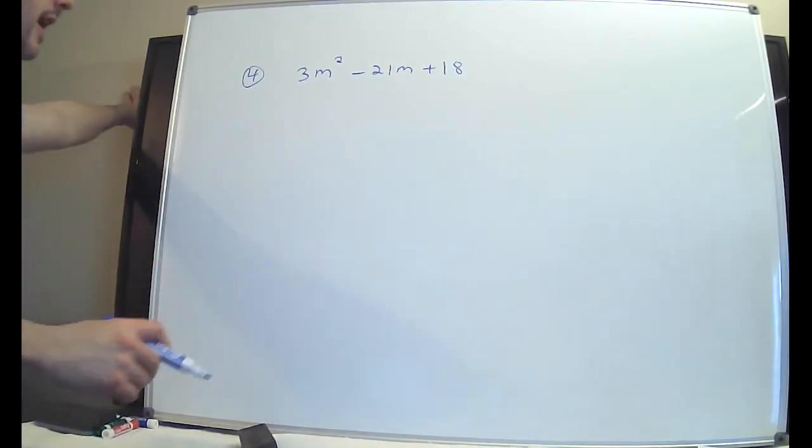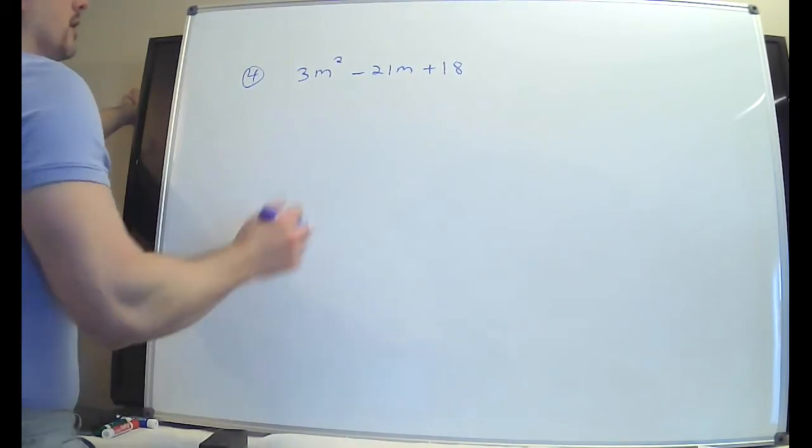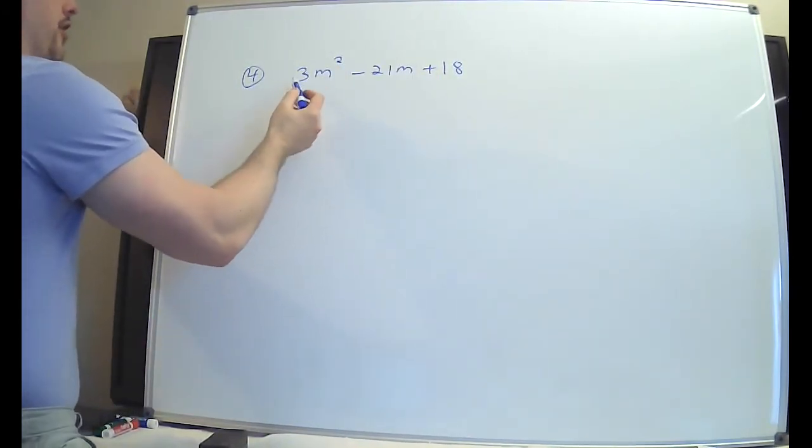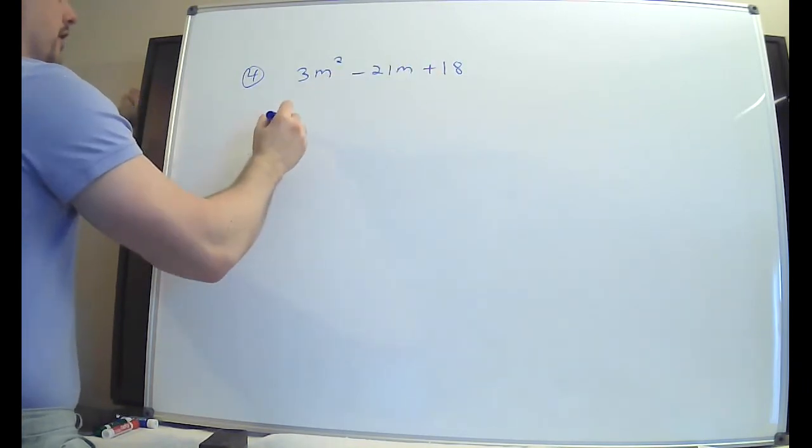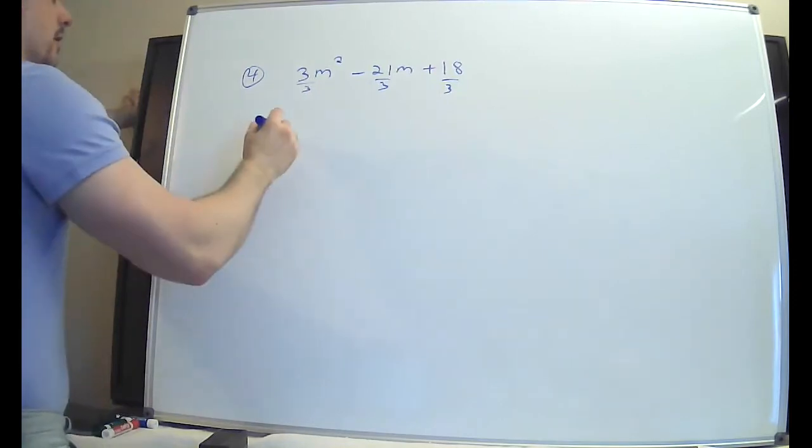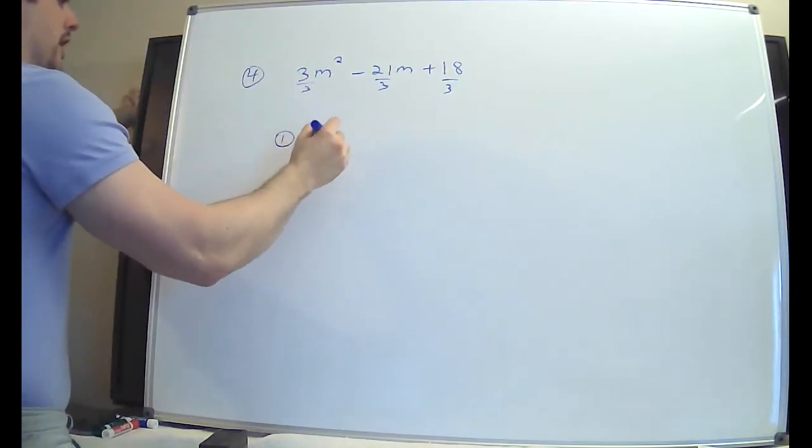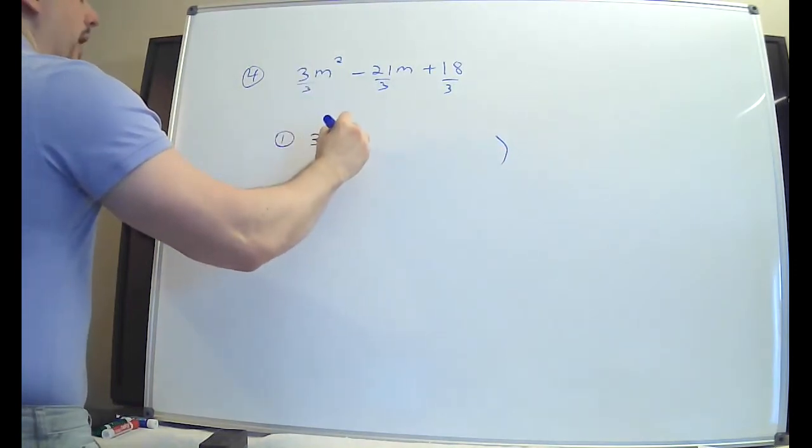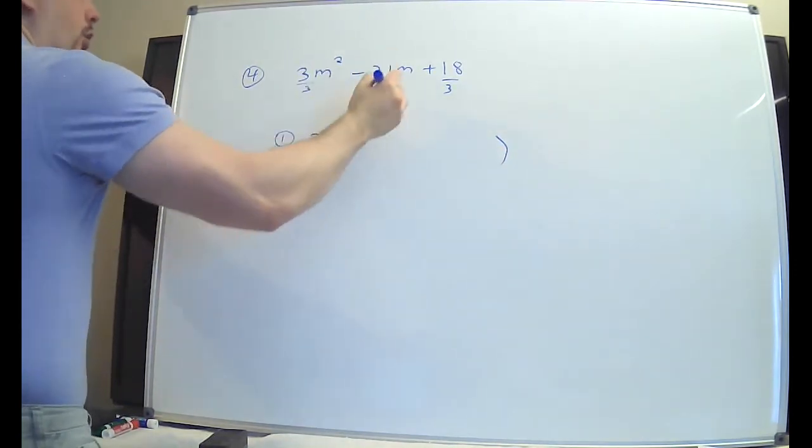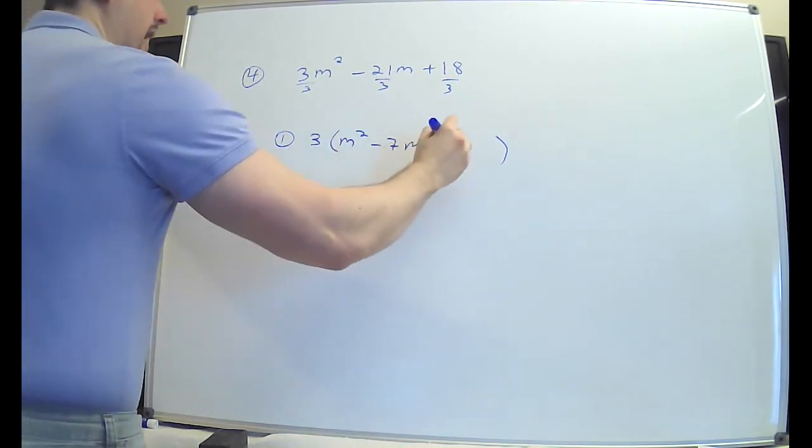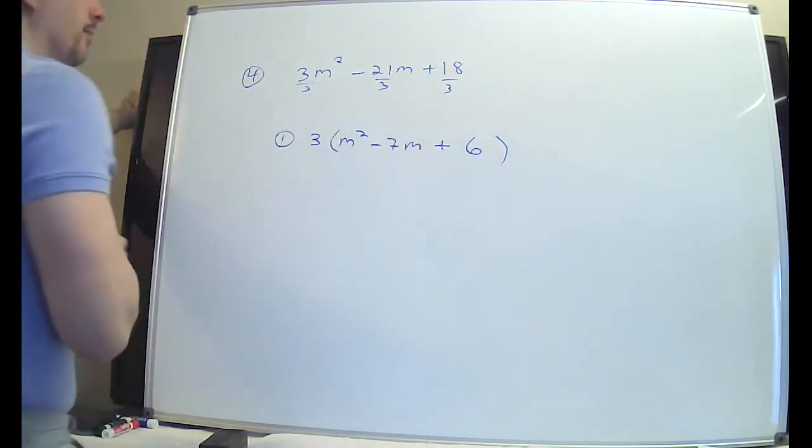All right. The fourth one, that is probably one of the easiest ones that were there. The only thing I had to watch about here was with the signs. I hope it's obvious that 3, 21, and 18 are all divisible by 3. So I'm going to write that there. So step one, put the 3 in the front. Put your big-ass parentheses. Those 3s divide away and make a 1, right? They cross out. 21 divided by 3 is 7. N goes along for the ride. 18 divided by 3 is a 6.